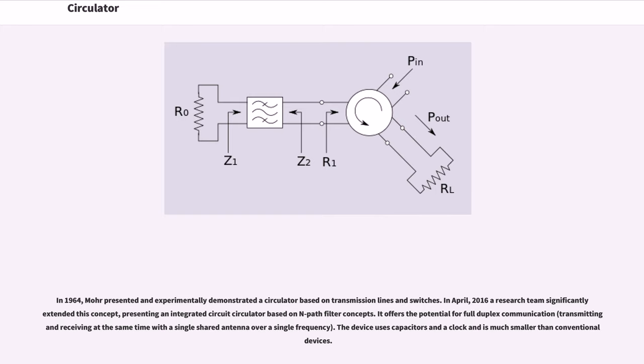In 1964, Moore presented and experimentally demonstrated a circulator based on transmission lines and switches. In April 2016, a research team significantly extended this concept, presenting an integrated circuit circulator based on n-path filter concepts. It offers the potential for full duplex communication. The device uses capacitors and a clock and is much smaller than conventional devices.